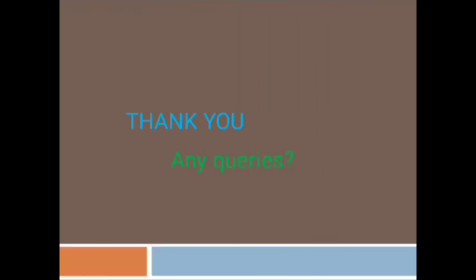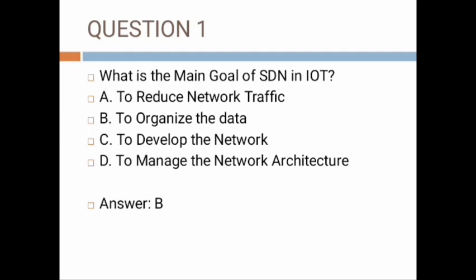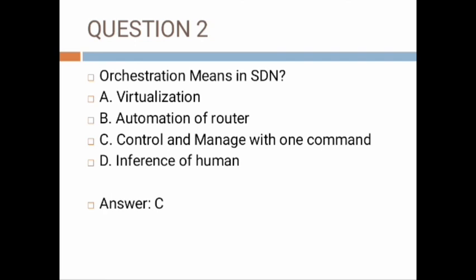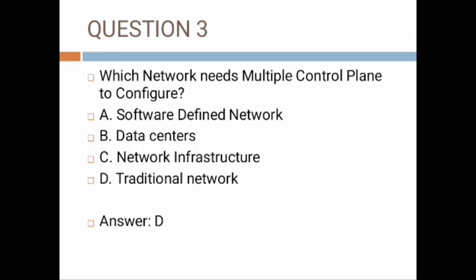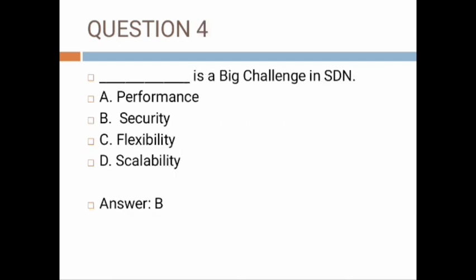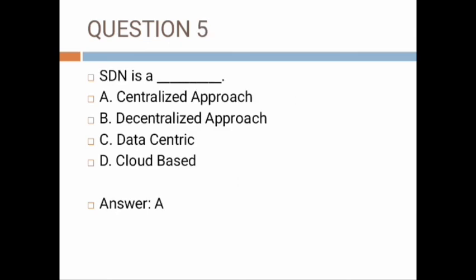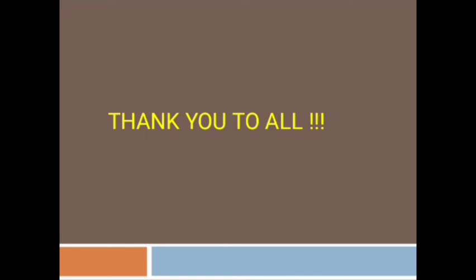Thank you. Now, the quiz questions: What is the main goal of SDN in IoT? Option B: to organize the data. What does orchestration mean in SDN? Option C: control and manage with one command. Which network needs multiple control planes to configure? Option D: traditional network. What is the biggest challenge in SDN? Option B: security. SDN is a — Option A: centralized approach. Thank you all.